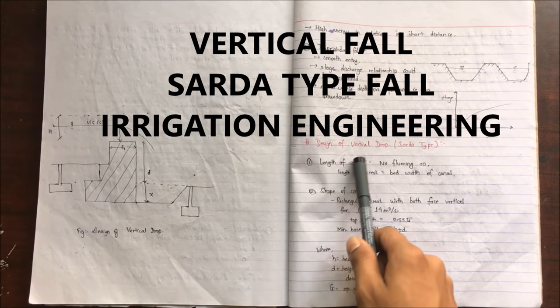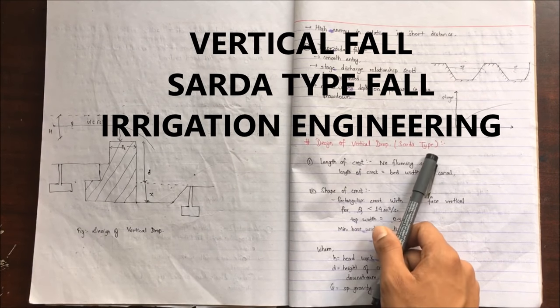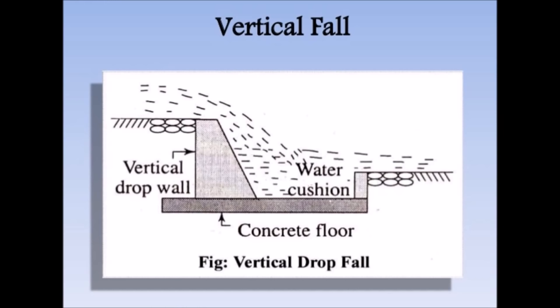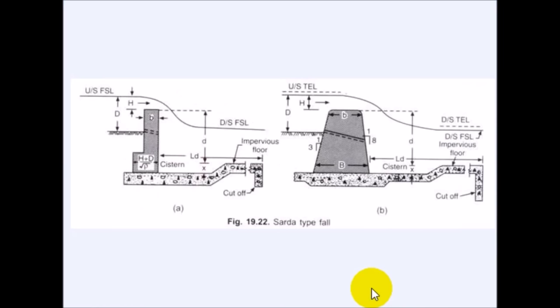In today's video we will discuss the design of vertical drop, also known as Sarda type fall. Whenever the natural available ground slope is steeper than the design bed slope of the channel, the difference is adjusted by constructing vertical falls or drops in the canal bed. Such a drop in the natural canal bed would not be stable, so a masonry structure is constructed, known as a canal fall or canal drop.